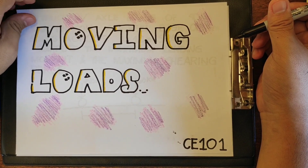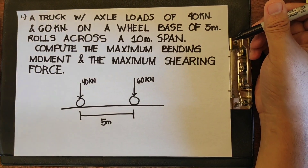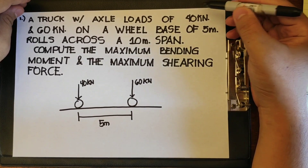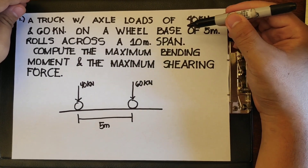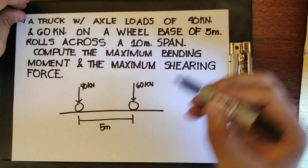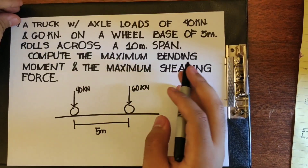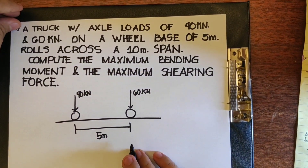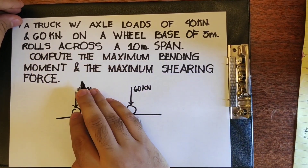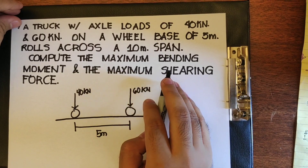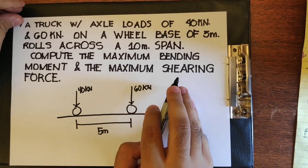For us to move on, we have an example right here. A truck with axle loads of 40 kN and 60 kN, shown in this figure, on a wheelbase of 5 meters, rolls across a 10-meter span. We need to compute the maximum bending moment and maximum shearing force.